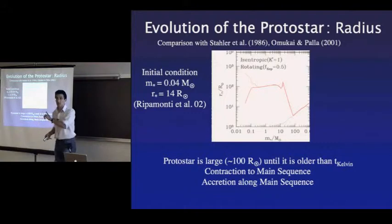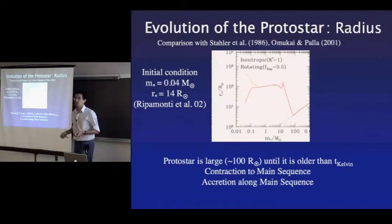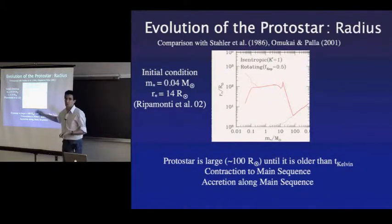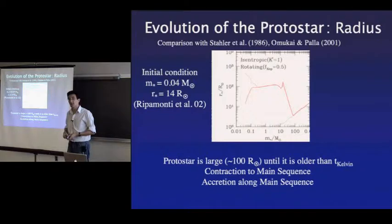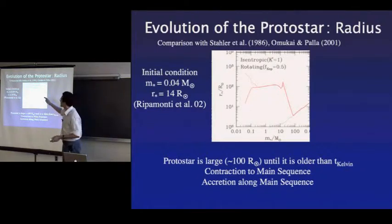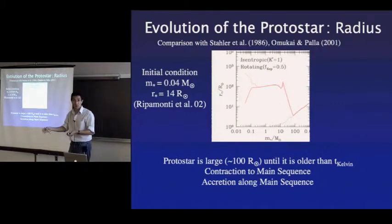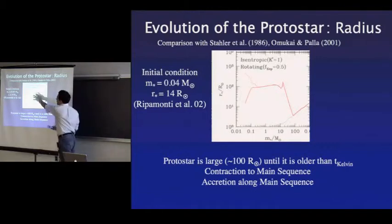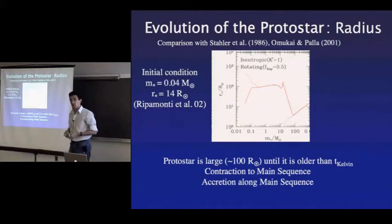The star is radiative. The opacities we use are from OPAL (Iglesias and Rogers 1996) for metal-free gas, though we treat the structure as a one-zone polytrope tracking the energy equation rather than doing a full stellar structure calculation. But you can check after the fact whether it should be convective or radiative — that's been checked in previous work. It's fully radiative at least in this pre-main sequence stage; it can change when you get to nuclear burning.